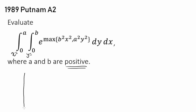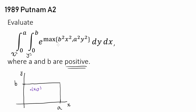We are integrating over x from 0 to a and y from 0 to b. Let's leave it as a greater than b for now and maybe consider the case where b is greater than a later. Let's draw our region. For a point x and y, we evaluate b squared x squared and a squared y squared — which one is larger, and in what region inside this rectangle of dimension a by b?